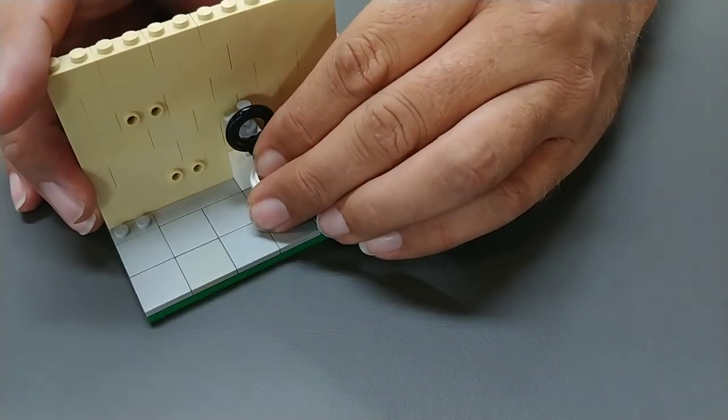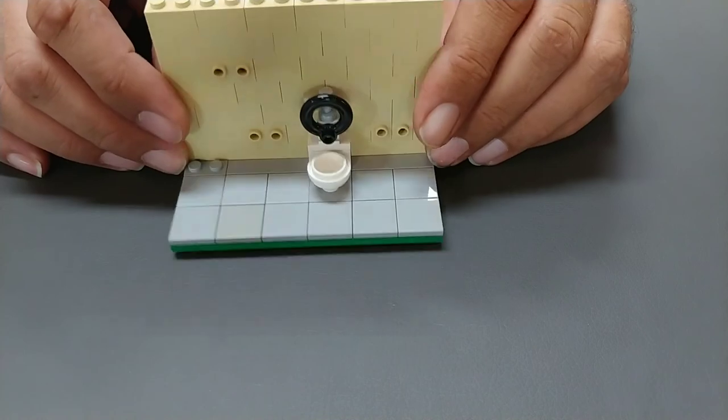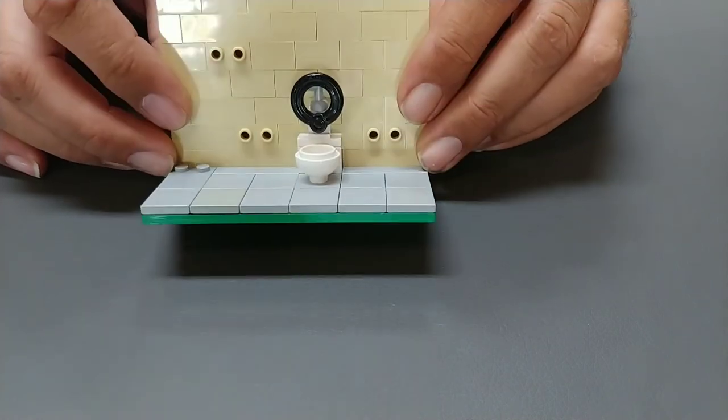And then this last stud, the 2x2 modified with the peg in the center, goes there. Now it looks like you have a little toilet in your bathroom.